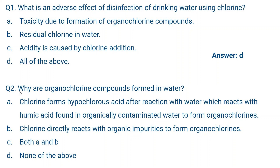Question number two: Why are organochlorine compounds formed in water? Chlorine forms hypochlorous acid after reacting with water, which then reacts with humic acid found in organically contaminated water to form organochlorines. So organically contaminated water contains humic acid and benzene compounds, and when hypochlorous acid reacts with these, organochlorines are formed. Option A is the correct answer.